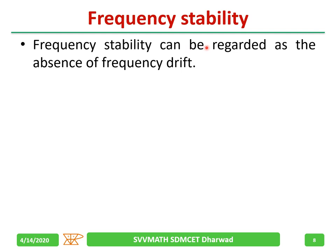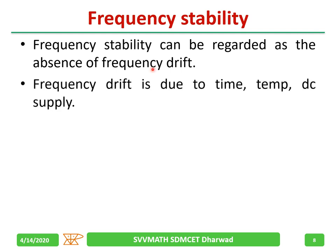Frequency stability can be regarded as the absence of frequency drift. Frequency drift means a change in frequency. For example, if our design targets 5 kilohertz, due to temperature change or supply variation, instead of 5 kilohertz we may get a plus or minus change in frequency. That is called frequency drift.